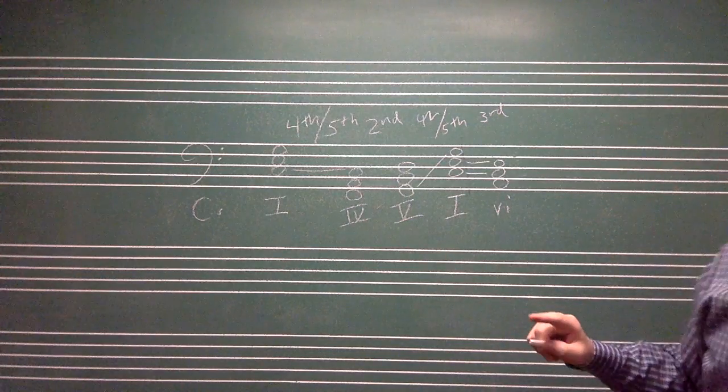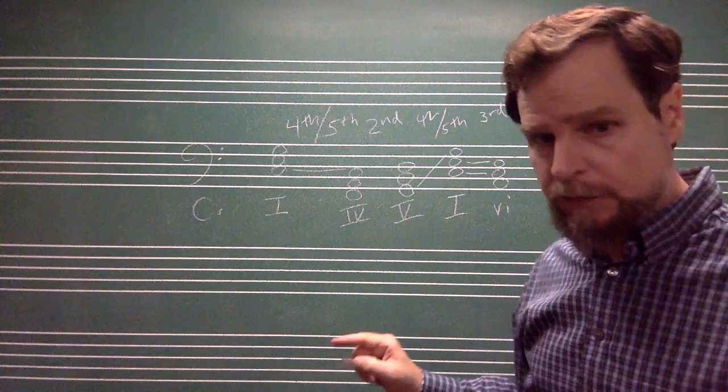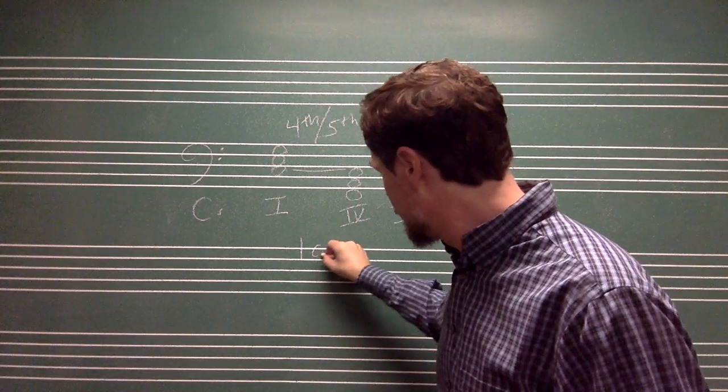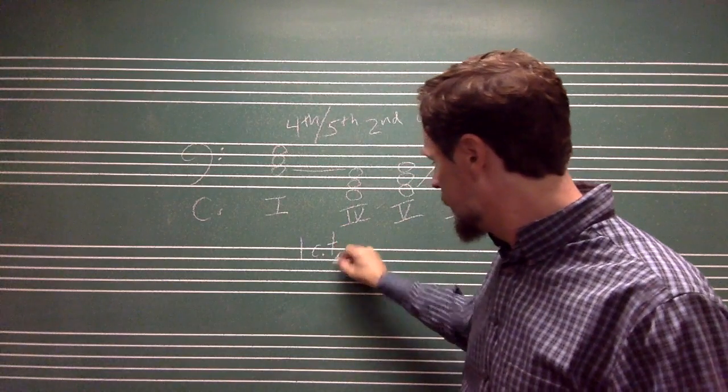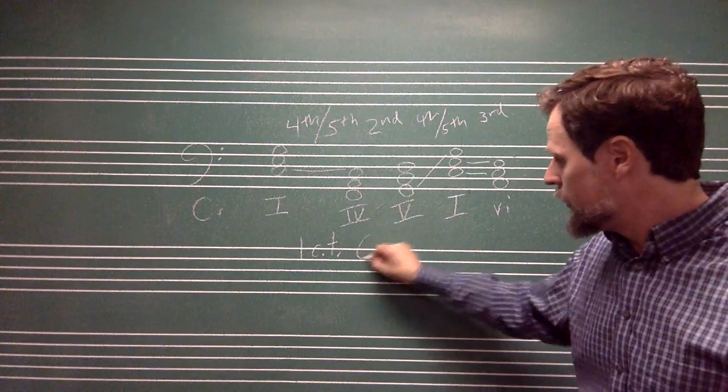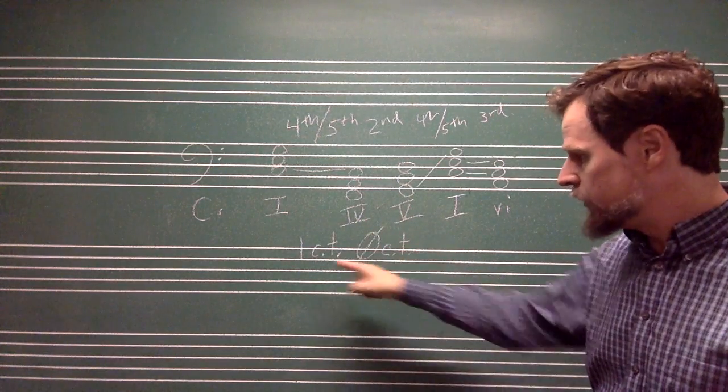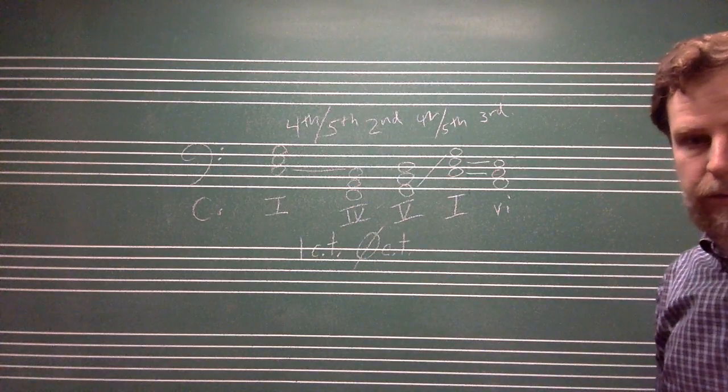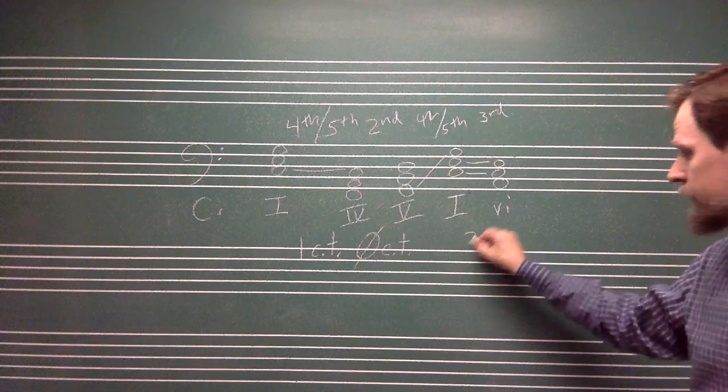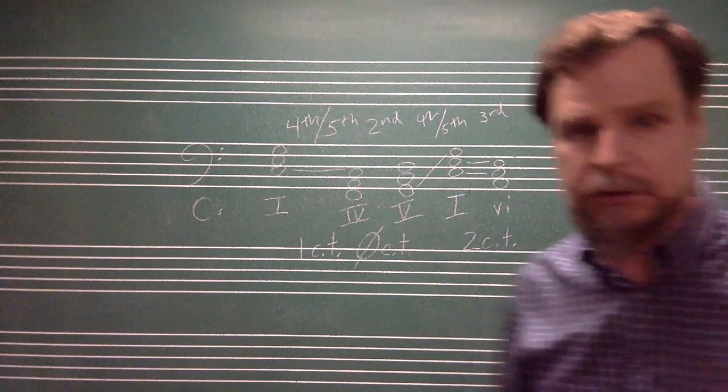So if you look at root movement by fourth or fifth, you will have one common tone. Root movement by second gives you zero common tones. I'm using CT for common tone. And root movement by third gives you two common tones.